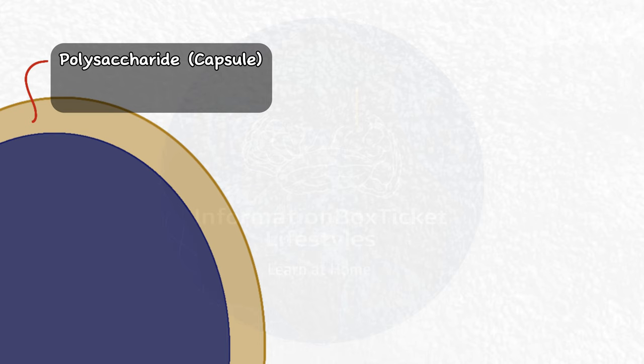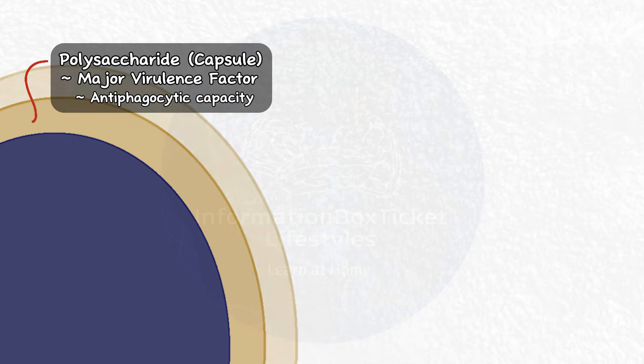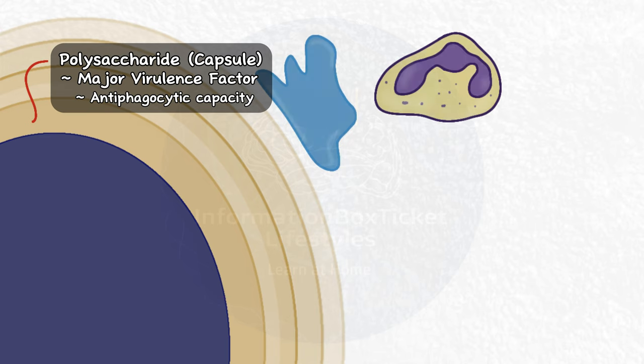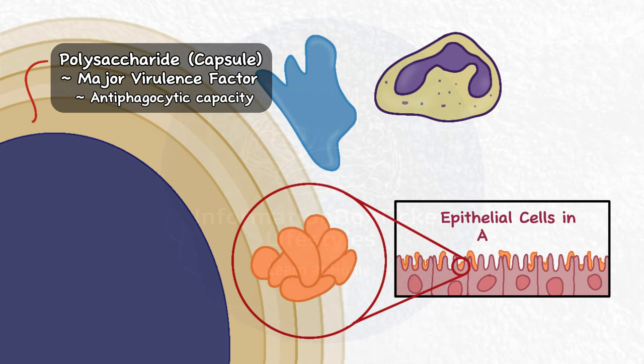Haemophilus influenzae possesses a number of virulence characteristics that behave like assault weapons, allowing it to target and damage host cells while evading the immune system. Encapsulated strains are protected by a polysaccharide layer known as a capsule. This capsule is a prominent virulence factor due to its antiphagocytic capacity, which shields the bacterium against phagocytosis by macrophages and neutrophils, permitting it to survive and bind to epithelial cells in the airways.